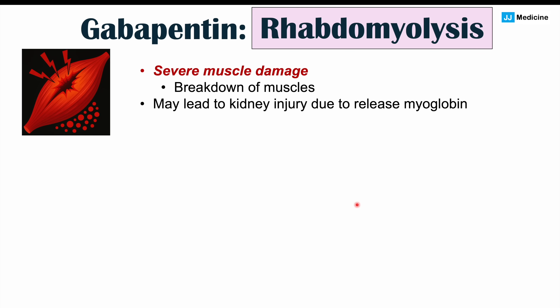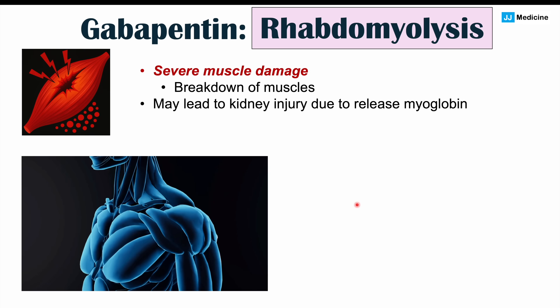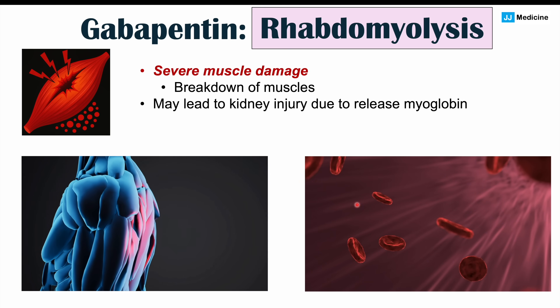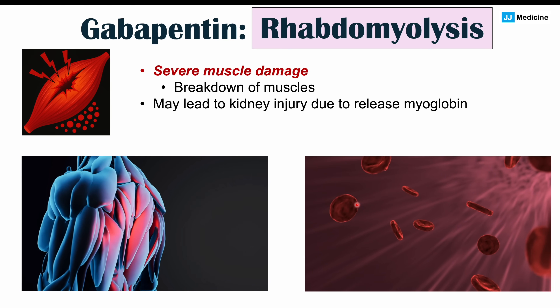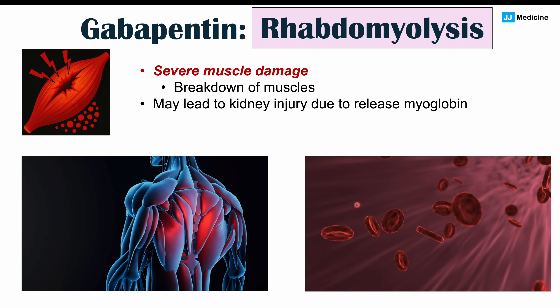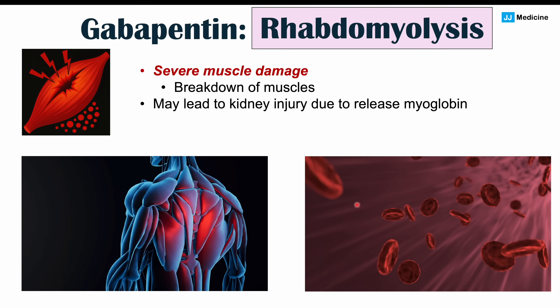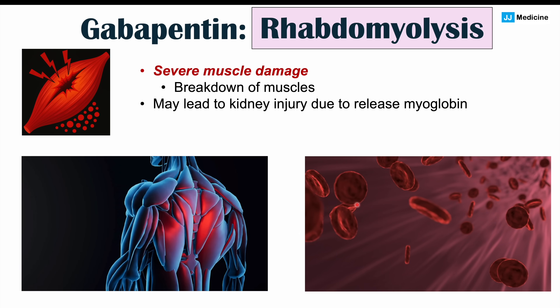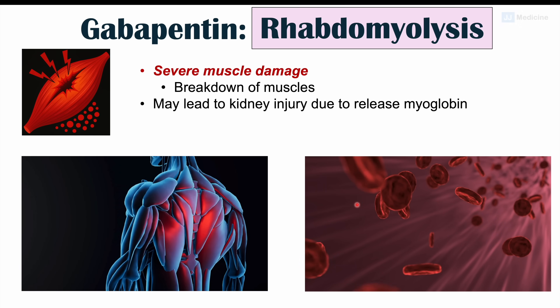Myoglobin acts to grab onto oxygen from the bloodstream, but it's only supposed to be in the muscles. If the muscles break down, myoglobin is released into the bloodstream. This can lead to myoglobin traveling through the bloodstream and impacting the kidneys. Myoglobin can actually be toxic to the kidneys, leading to acute kidney injury, and if not dealt with appropriately — for example, not giving enough fluid to remove the myoglobin — the kidneys can be permanently damaged.